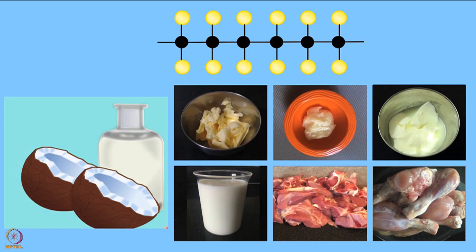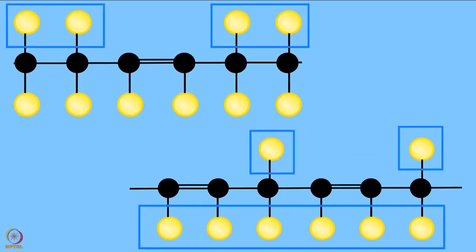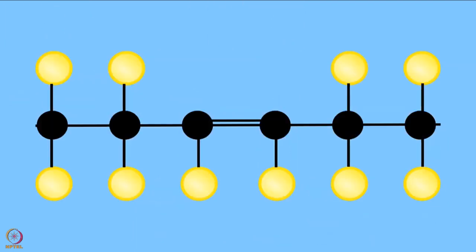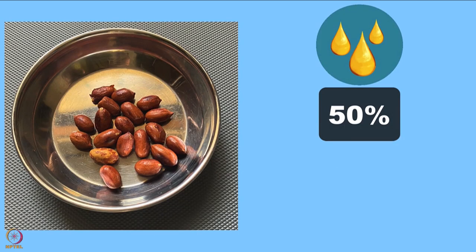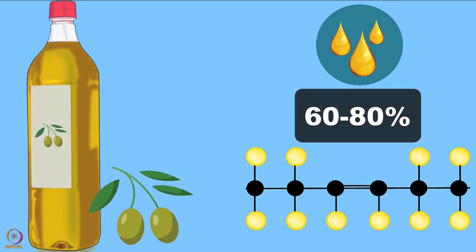Saturated fats are found in coconut, milk, milk products, meat, etc. In such fats, hydrogens fill up all the available spots on the chain. However, if only some spots are filled with hydrogen, the fat is unsaturated. There are mono-unsaturated fats which have only one unsaturated carbon pair. More than 50% of the fat in peanuts is mono-unsaturated. About 60-80% of the fat in olives is mono-unsaturated.